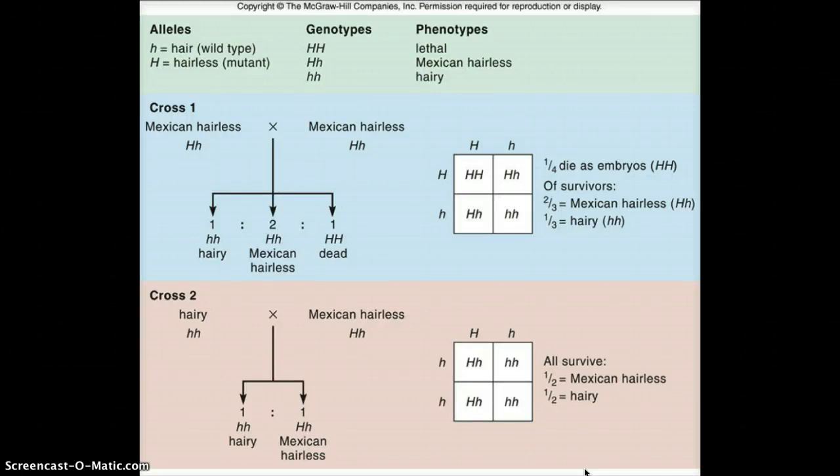So if you have dominant alleles, one or two, you get the dominant phenotype. And if you have recessive alleles, you need to have two, you get the recessive phenotype. But in this instance, there's actually three possible outcomes from the combination of alleles.